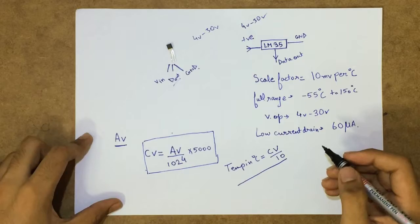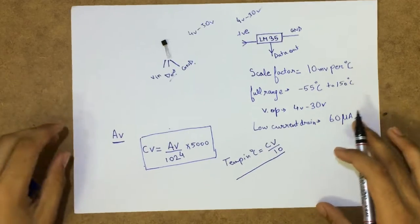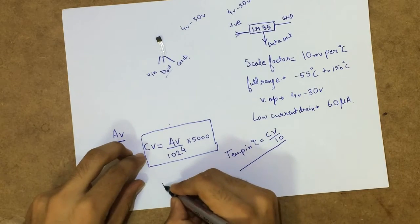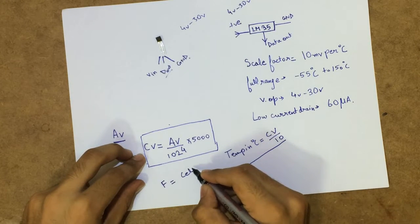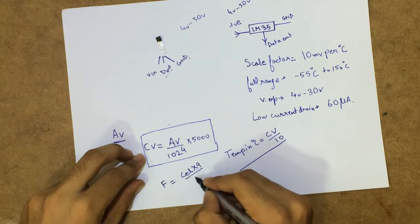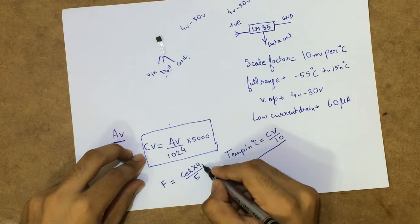And for people who like the Fahrenheit thing, you all know Fahrenheit will be equal to Celsius value into 9 by 5 plus 32.